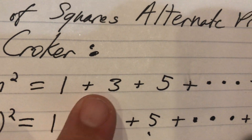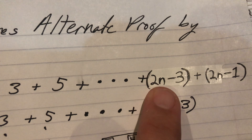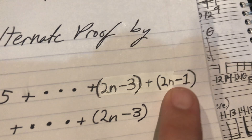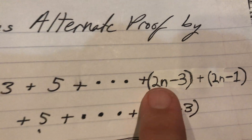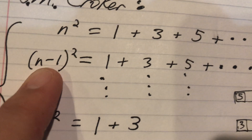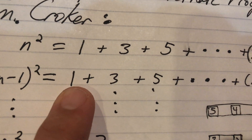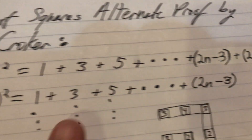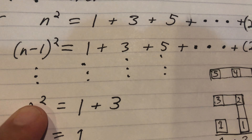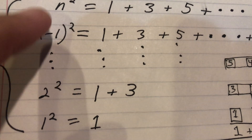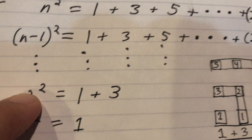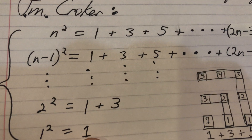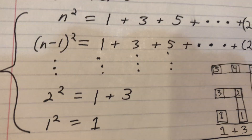One plus three gives a two by two square. One plus three plus five gives a three by three square. Adding odd numbers gives you n squared. So n squared equals one plus three plus five, going out to two n minus three and finally two n minus one. Then take one less than that: go all the way out but stop one short, stopping at two n minus three. Keep going down: two squared is one plus three, one squared is just one. Now we're going to add up the columns.